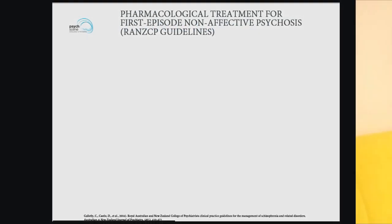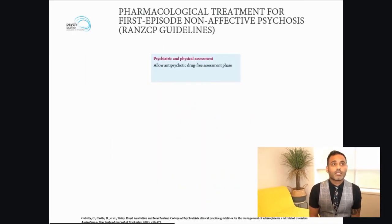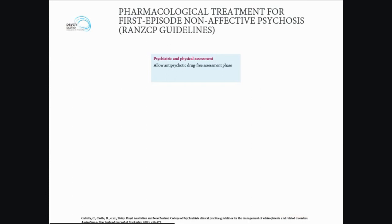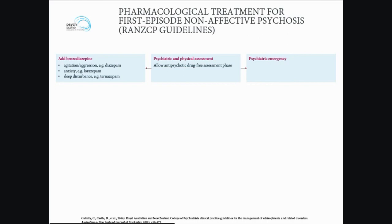Droperidol is preferred in cases where there is stimulant-associated psychosis, for example methamphetamine-associated psychosis. The pharmacological treatment for first episode and non-affective psychosis from the RANZCP guidelines begins with a psychiatric and physical assessment and allowing an antipsychotic drug-free assessment phase. One may consider adding a benzodiazepine for symptomatic treatment — for example, temazepam for sleep disturbances or lorazepam for anxiety and arousal. If there is a psychiatric emergency, go to the acute arousal protocol.